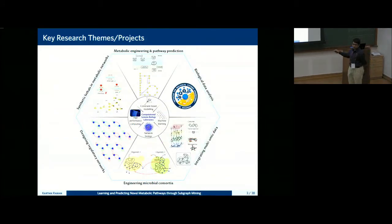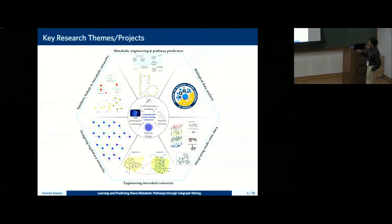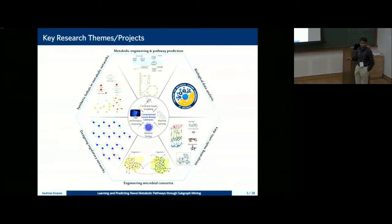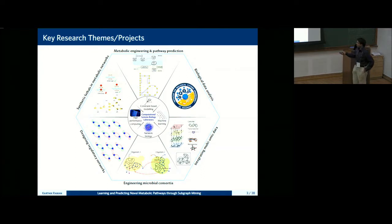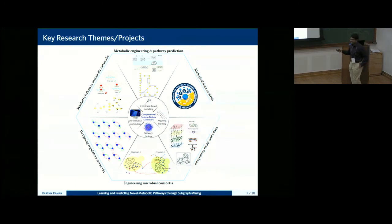A key area we've been working on in recent years is engineering microbial consortia — not studying a single isolated metabolic network, but what happens when you put a couple of metabolic networks together. We've also been working with Arun on designing regulatory networks using a control-theoretic strategy rather than the brute force approaches people have used in the past.